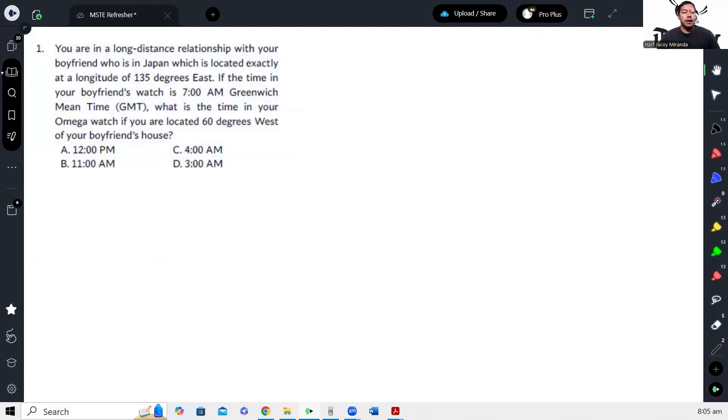Okay, so problem number one. You are in a long-distance relationship with your boyfriend who is in Japan, which is located exactly at a longitude of 135 degrees east. If the time in your boyfriend's watch is 7 AM Greenwich Mean Time, what is the time in your Omega watch if you are located 60 degrees west of your boyfriend's house?